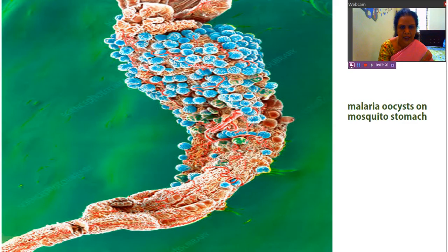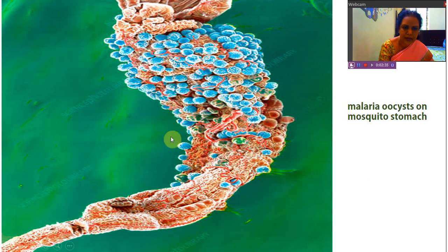This is the crop of the female Anopheles mosquito where we can see a number of nodules, which are nothing but oocysts of Plasmodium vivax. These are all the oocysts present on the crop — the digestive system of the Anopheles mosquito. This was proved by Ronald Ross, for which he got the Nobel Prize.